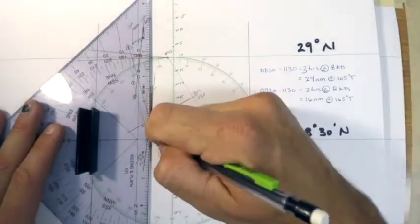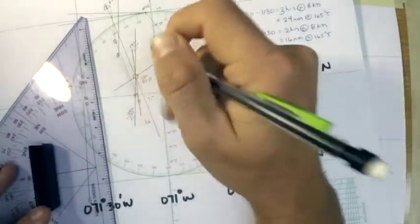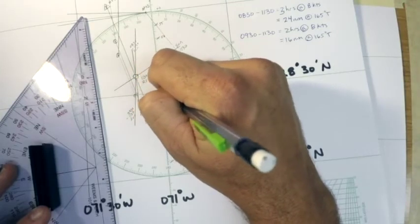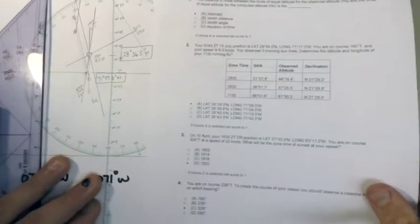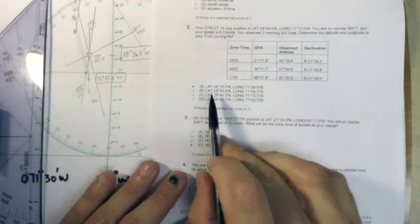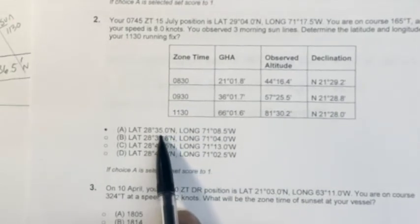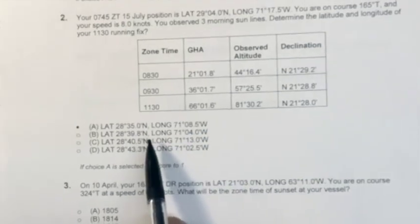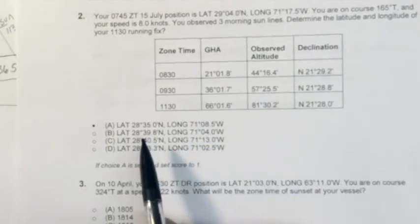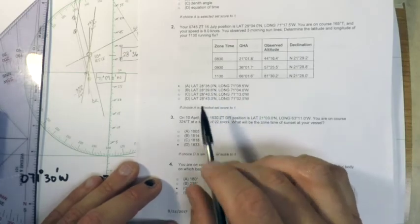Looking at the choices here for the final answer, it looks like choice A is my closest answer. Compared to the coast guard I was off a mile and a half on the latitude and a half mile on the longitude, and I would count that as perfectly fine. In this case we took a couple assumptions along the way, so A would be the correct answer.